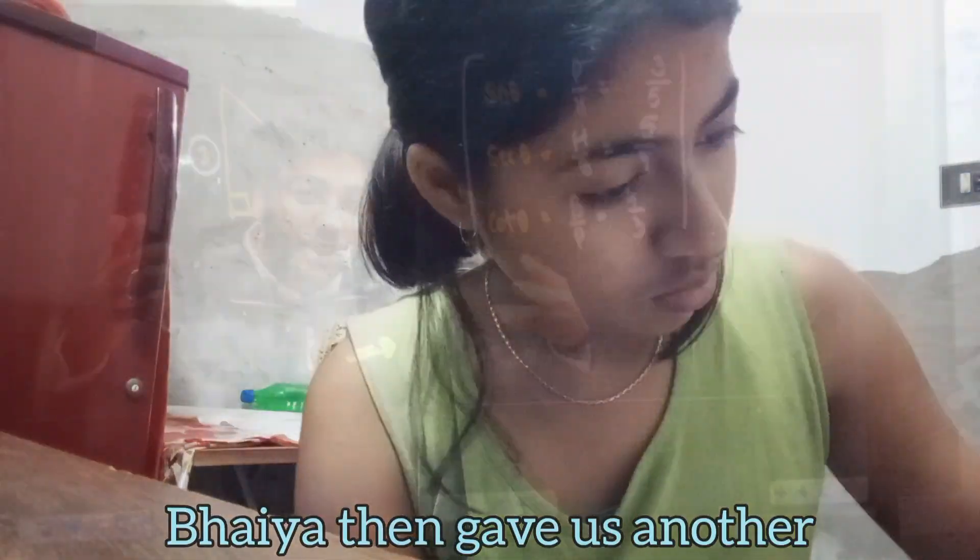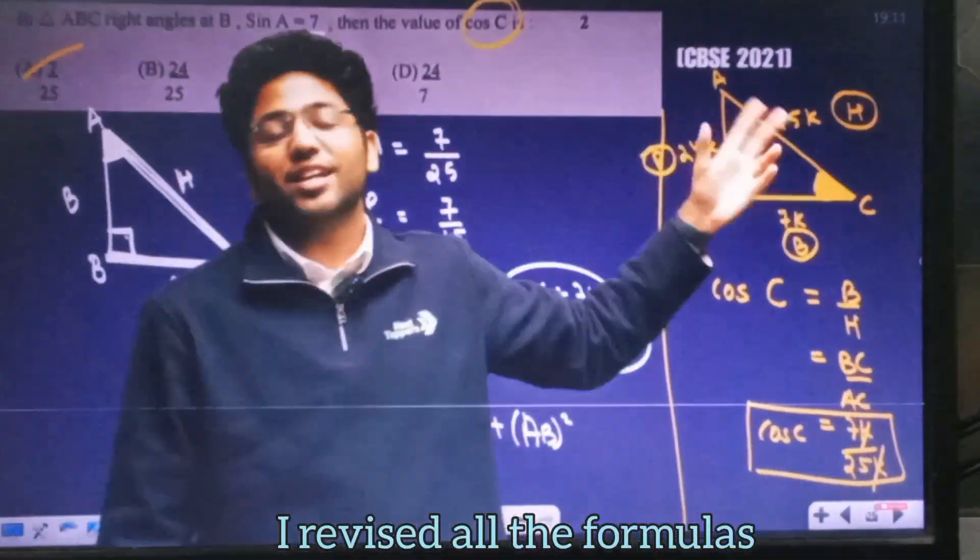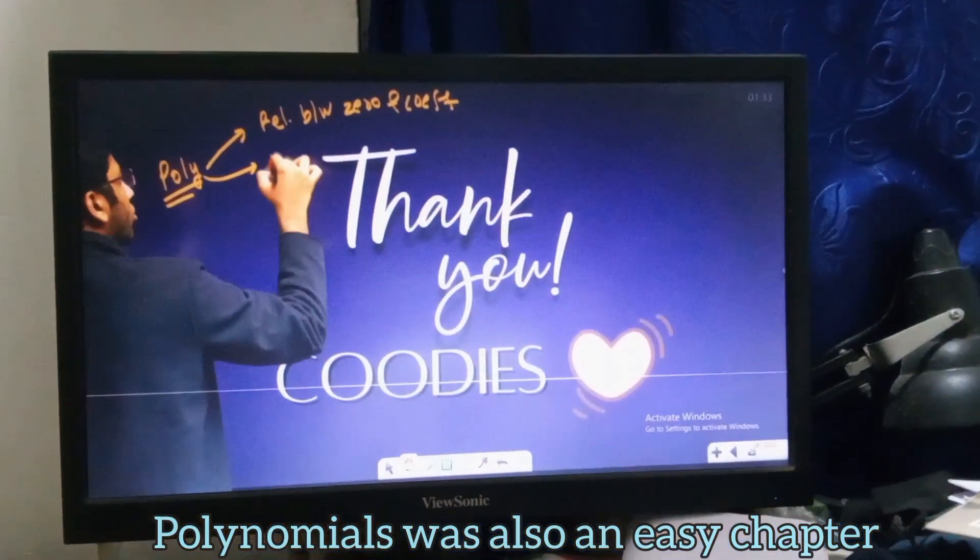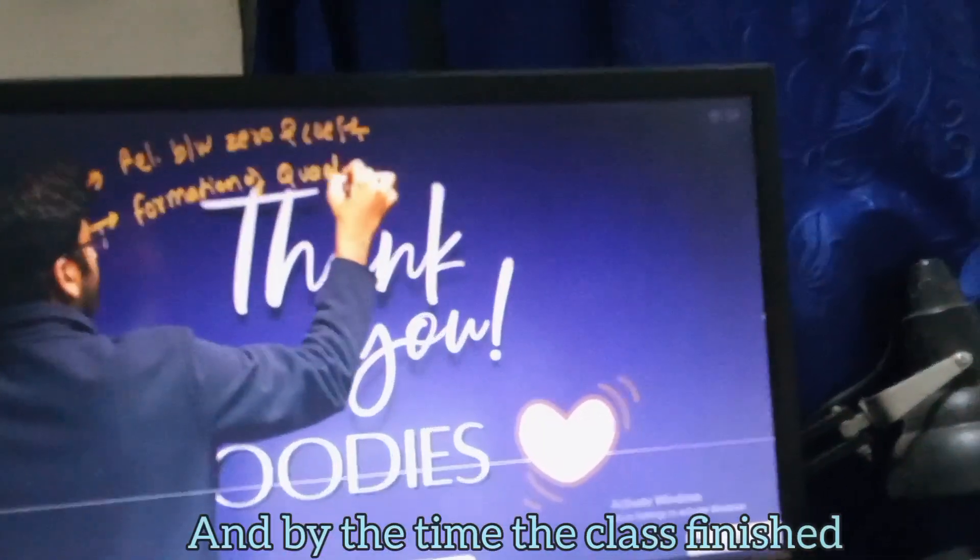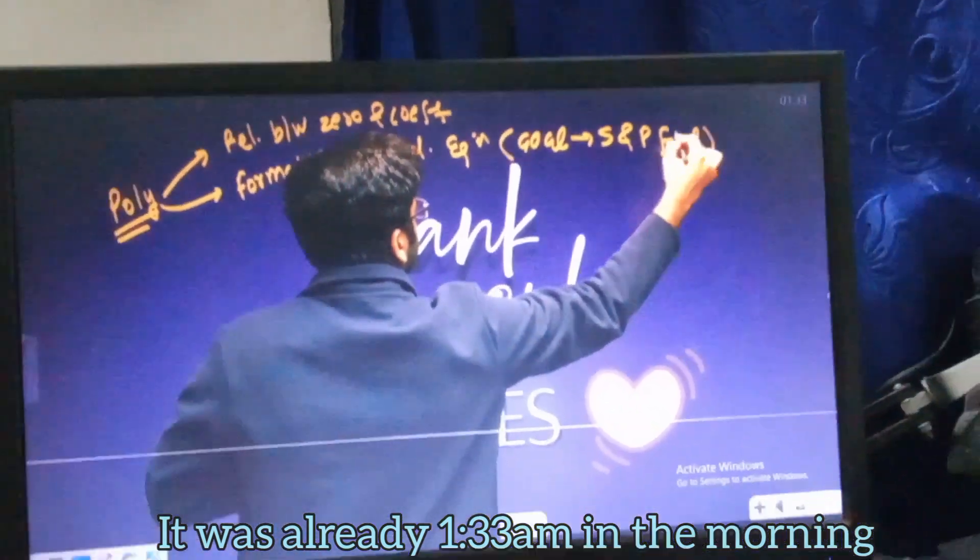Bhaiya then gave us another 15-minute break before starting polynomials. I revised all the formulas quickly by that time. Polynomials was also an easy chapter so it ended in about 1 hour and by the time the class finished, it was already 1.33am in the morning.